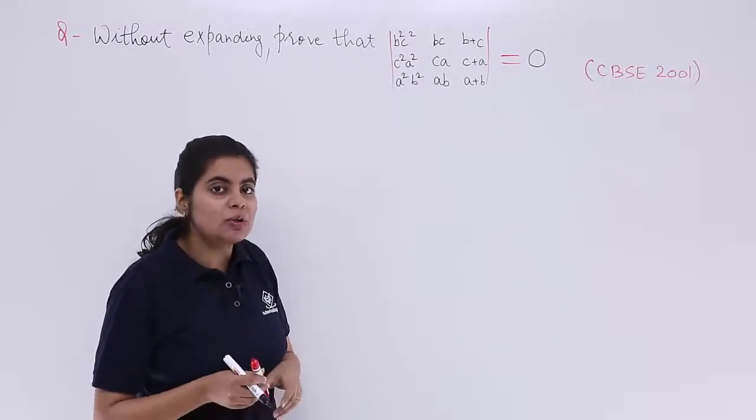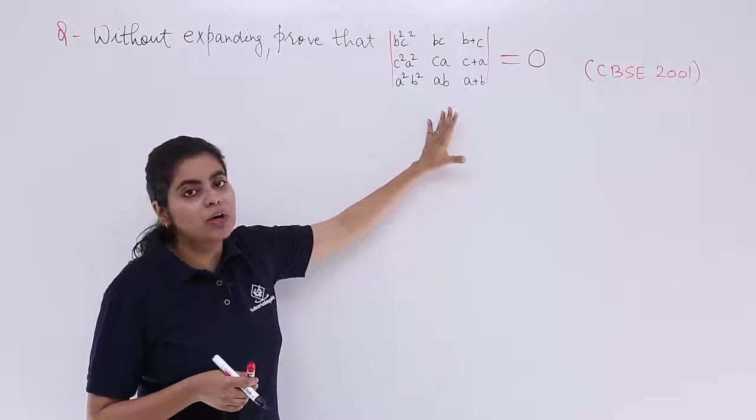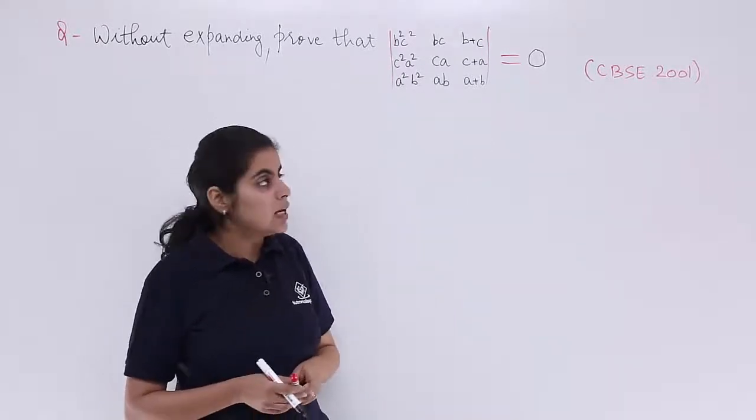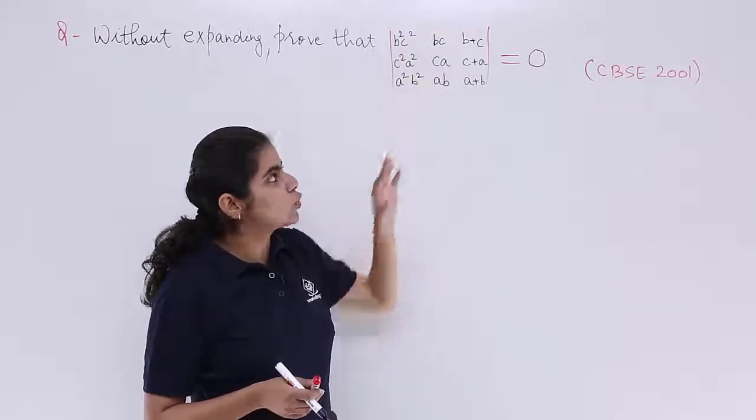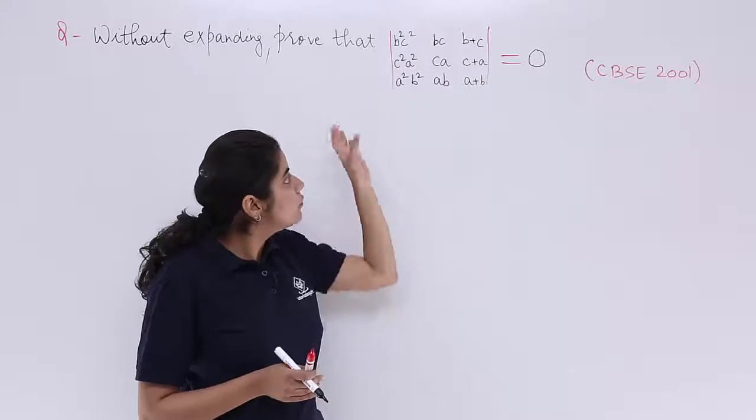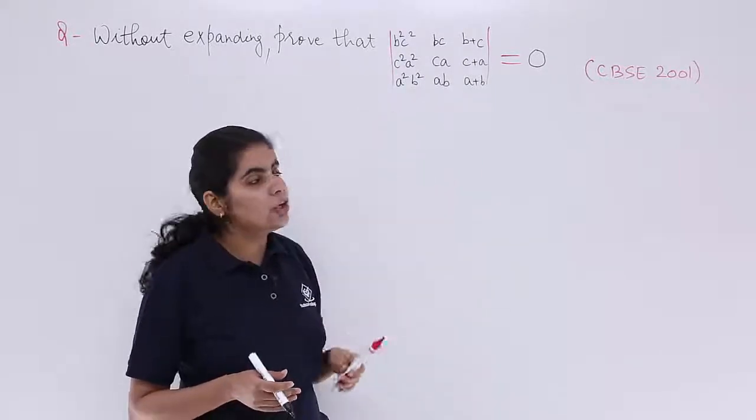So that means we have to apply some knowledge of ours so as to make things easier for us. Because ultimately in the last, we should be getting 0. Now if you see in the first row, everything is there in B's and C's, no A's. If you see in the second row, everything is there except B's and in the third row, no C's.